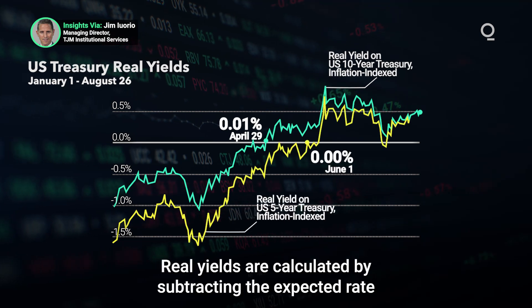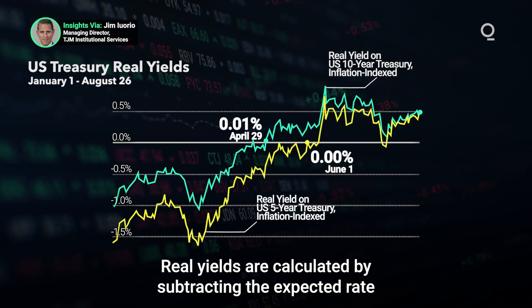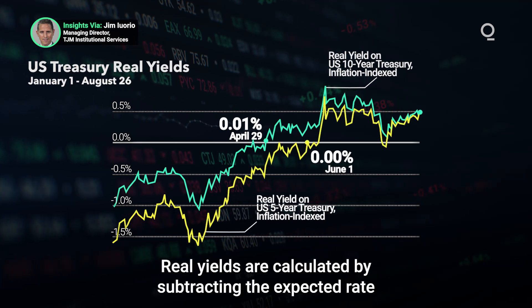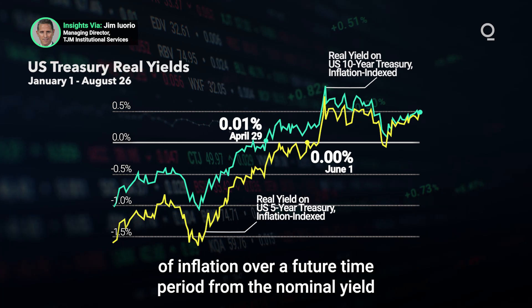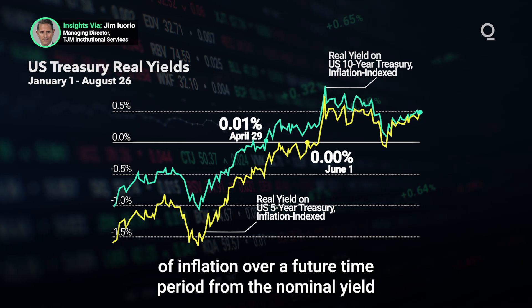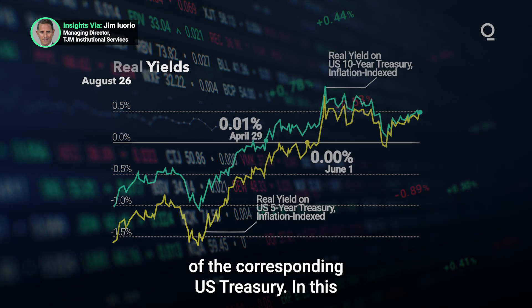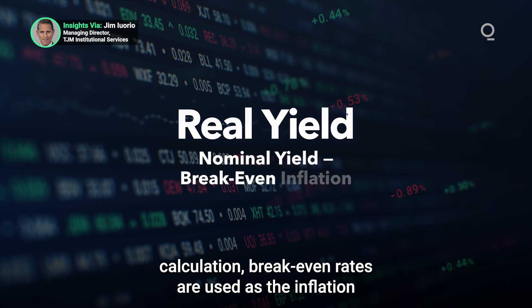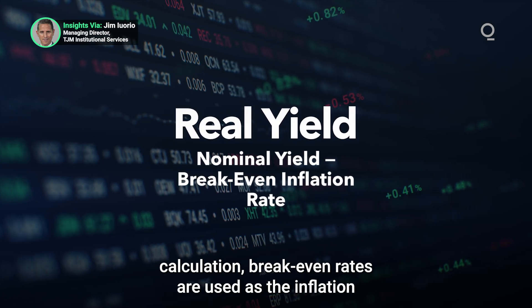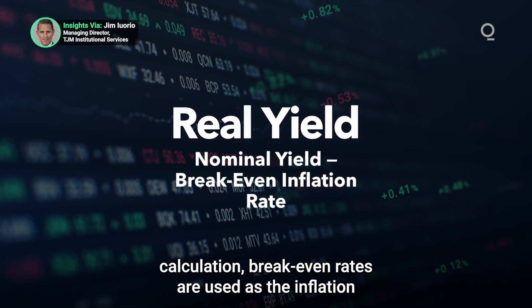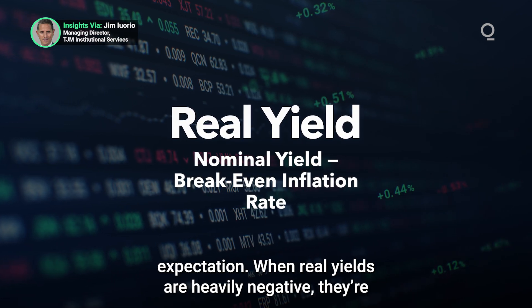Real yields are calculated by subtracting the expected rate of inflation over a future time period from the nominal yield of the corresponding U.S. Treasury. In this calculation, breakeven rates are used as the inflation expectation.